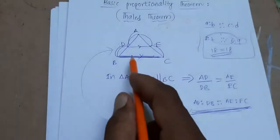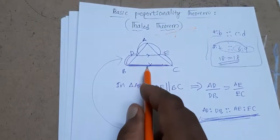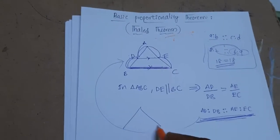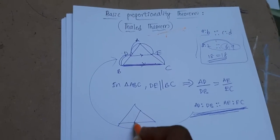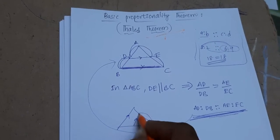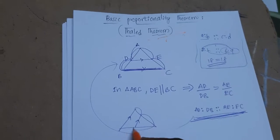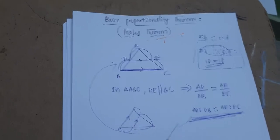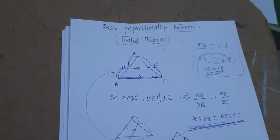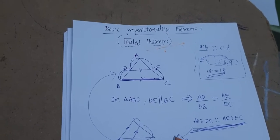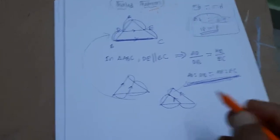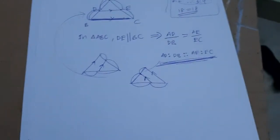I drew the line parallel to one side. You can also go with one more way — this side also parallel, and these two are also parallel, these are in the same ratio. Or take one more side as parallel — these are also in proportion. Any model we can take.